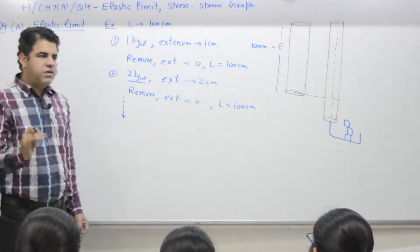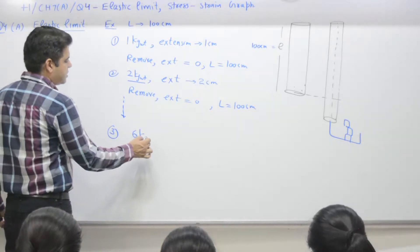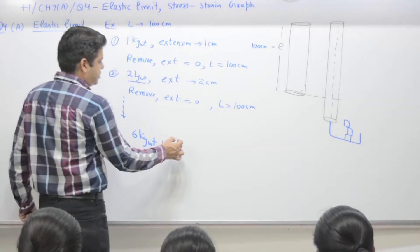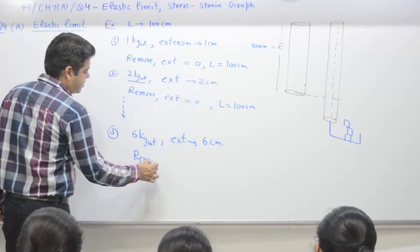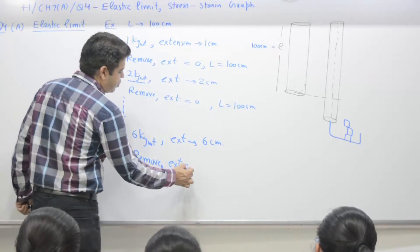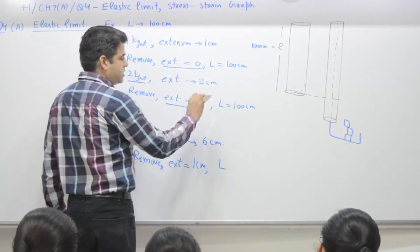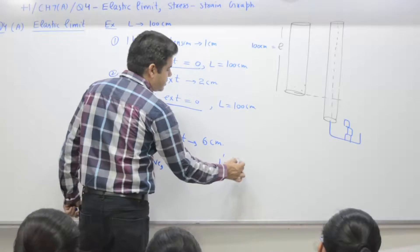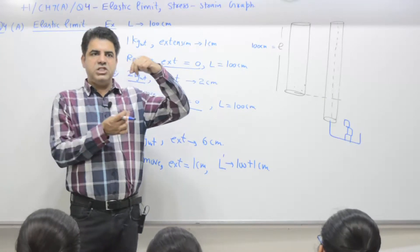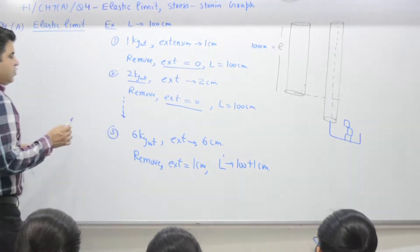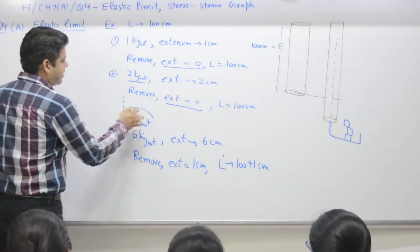The moment you exceed 5 kilogram weight — say the load applied is 6 kilogram weight — extension is 6 centimeter. You remove the weight, extension is not 0, it is say 1 centimeter. Original length was 100, new length is 101 centimeter. The wire has undergone permanent change in length. So you can apply weight up to less than 6 kilogram, say 5 kilogram weight.